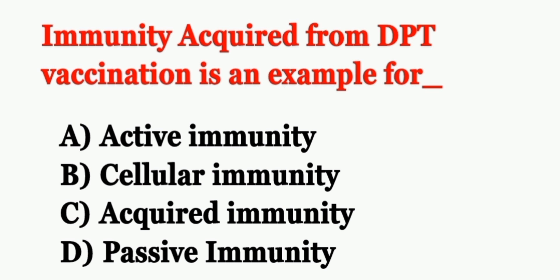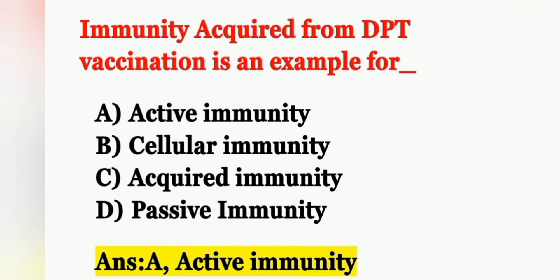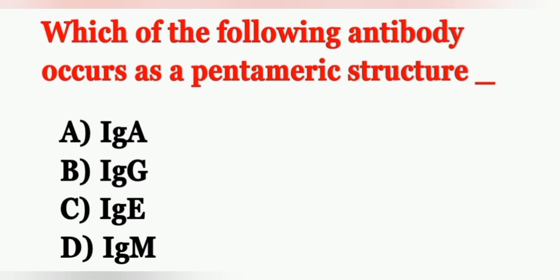Next question: Immunity acquired from DPT vaccine is an example of — Option A: active immunity, Option B: cellular immunity, Option C: acquired immunity, Option D: passive immunity. The correct answer is Option A, active immunity. Immunity developed after vaccination is an example of acquired active immunity.